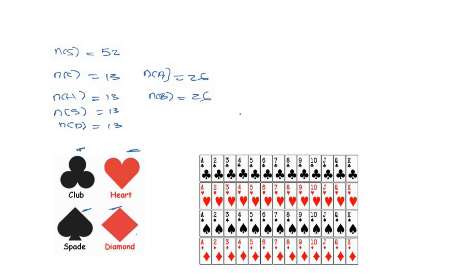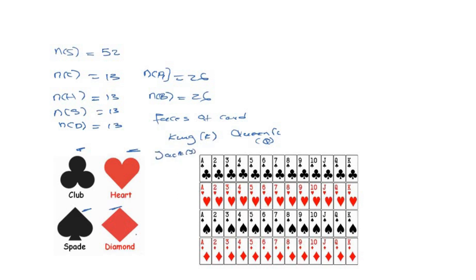In this pack of cards, we also have special types of cards called face cards. These face cards are: king, represented as K; queen, represented as Q; and jack, represented as J.